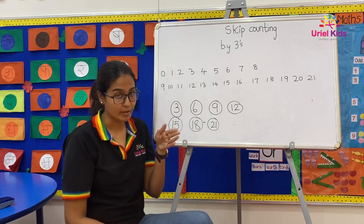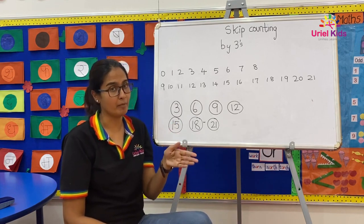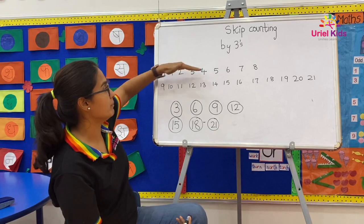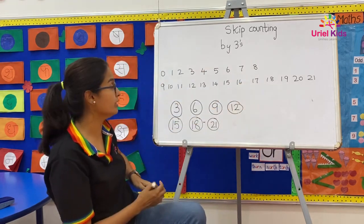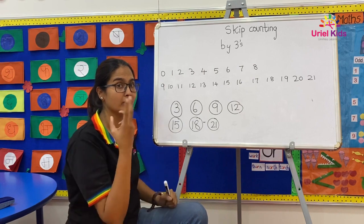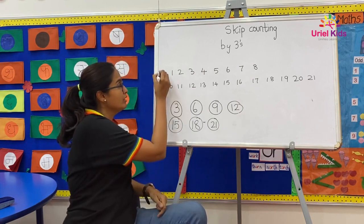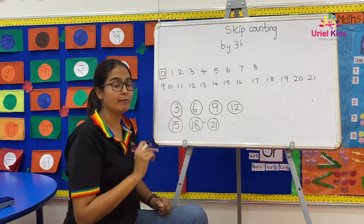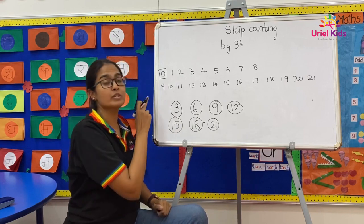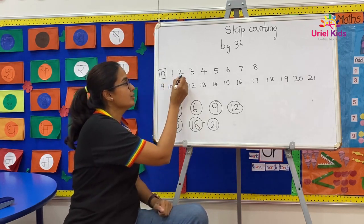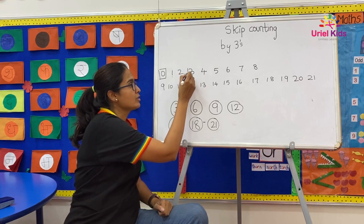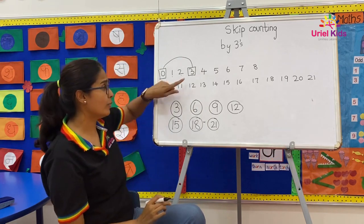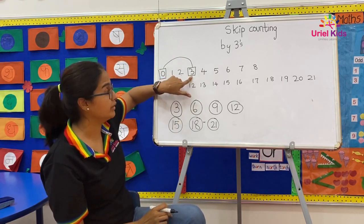From where we stand, we are going to jump on every third number. Let's look into this example. This is a number line that I have written on the whiteboard. So now let's try to hop and jump on every third number. I am going to put a box on number zero. From here, I am going to jump on the third number — one, two, three. So I am directly going to jump on number three.